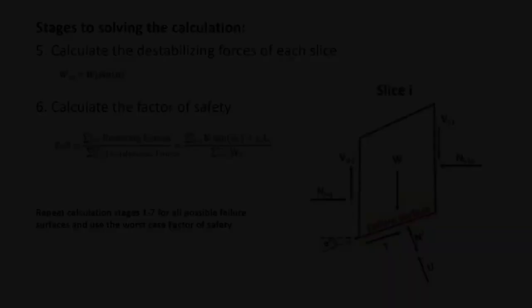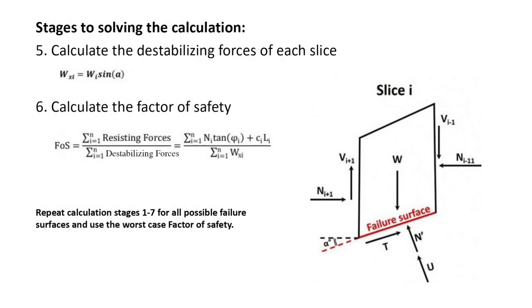The destabilizing forces on each slice are calculated using the weight of each slice and the angle of the slice base from horizontal. The factor of safety of the slope is the ratio between the sum of the resisting and the sum of the destabilizing forces acting on all slices.